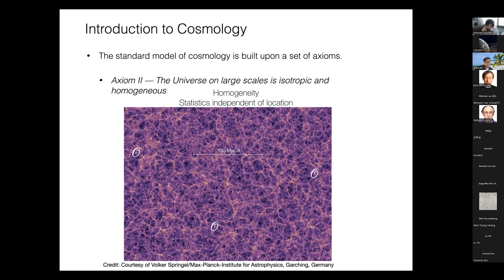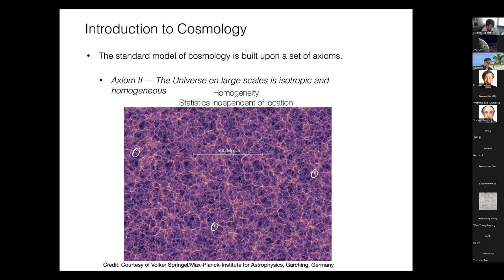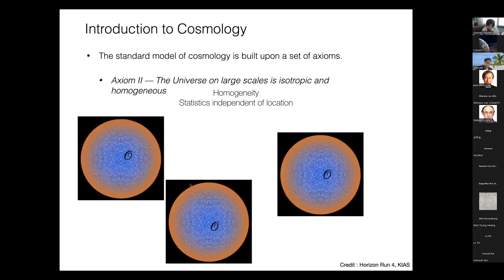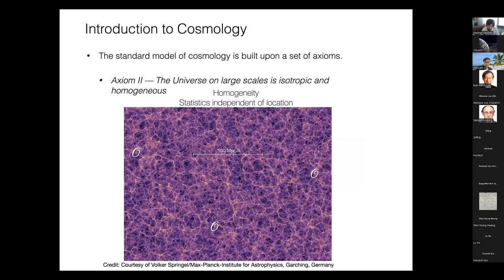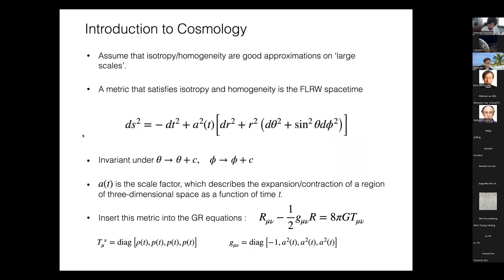If you measure a distant galaxy cluster, the photons have to traverse that distance in time, so you observe that cluster in the past — this is the light cone. Locally you measure galaxies on roughly the same time slice as yourself, but for distant objects you observe increasingly earlier epochs. Different observers are not in causal contact. So homogeneity is an assumption that goes into cosmology, but if you make it, the background dynamics become tractable due to the imposed symmetry.